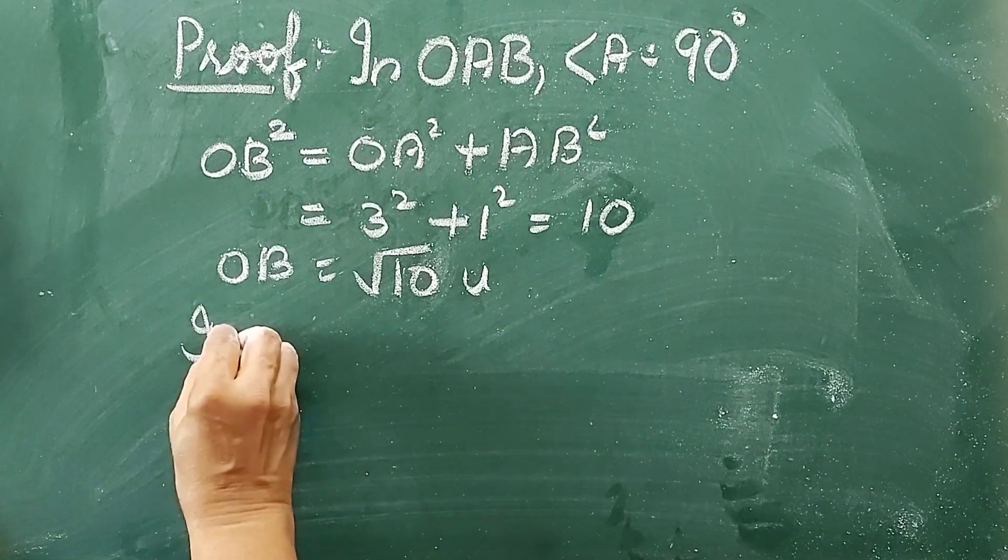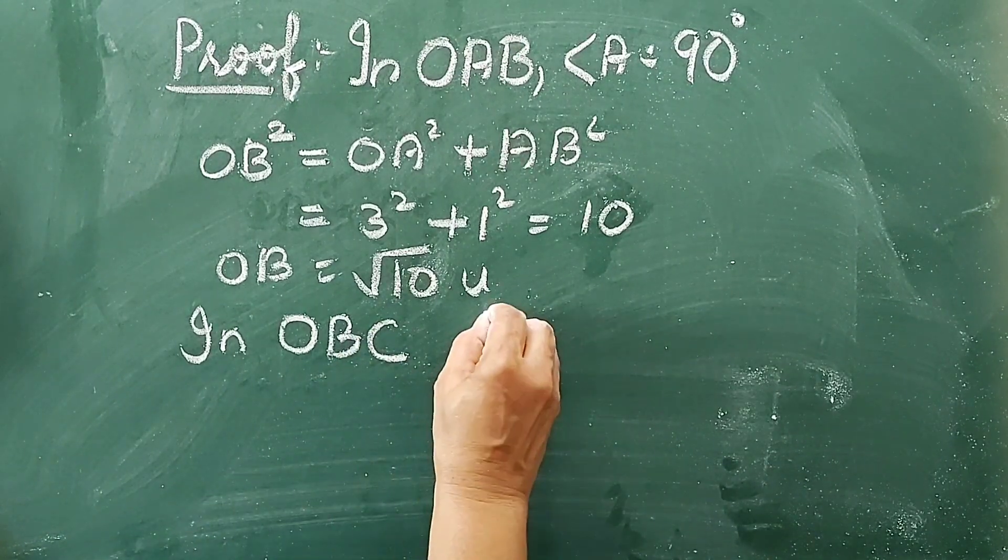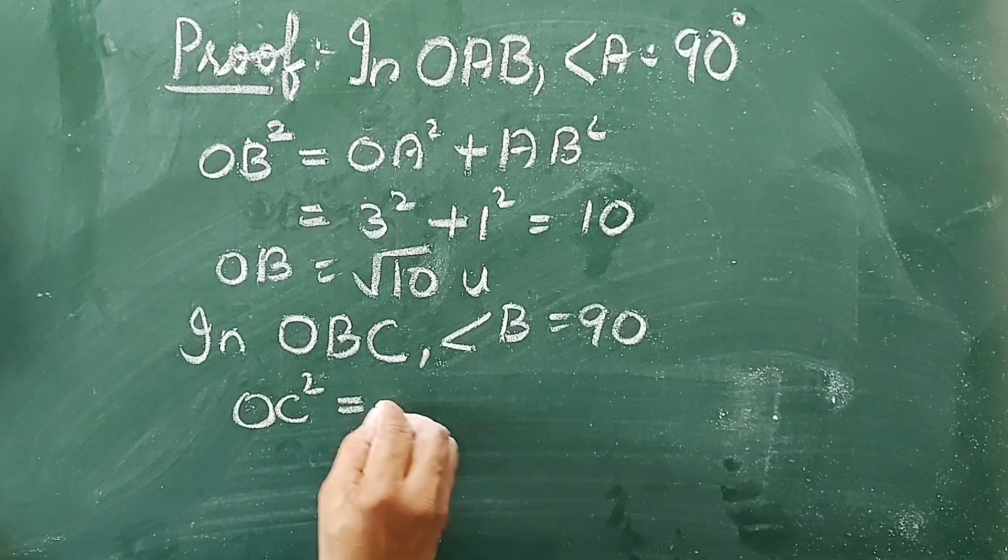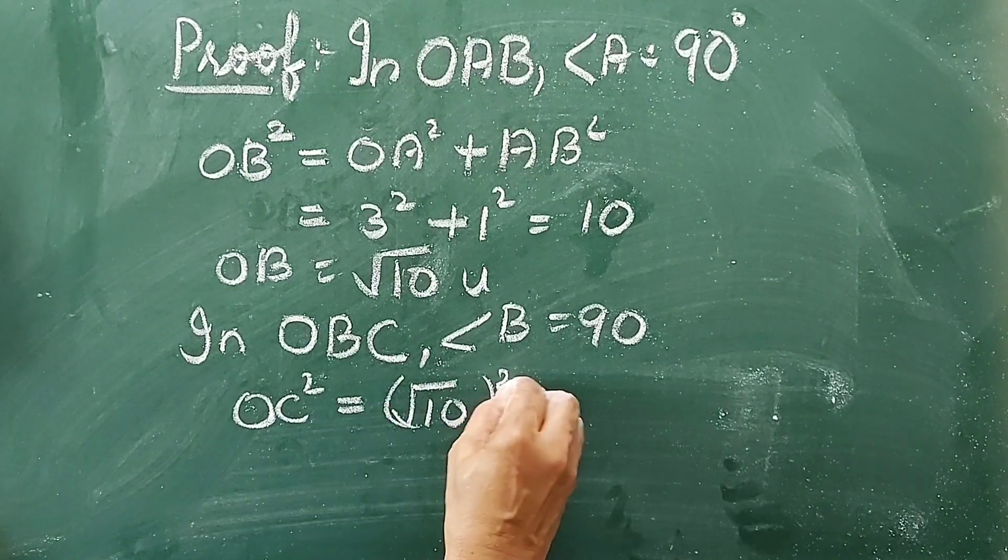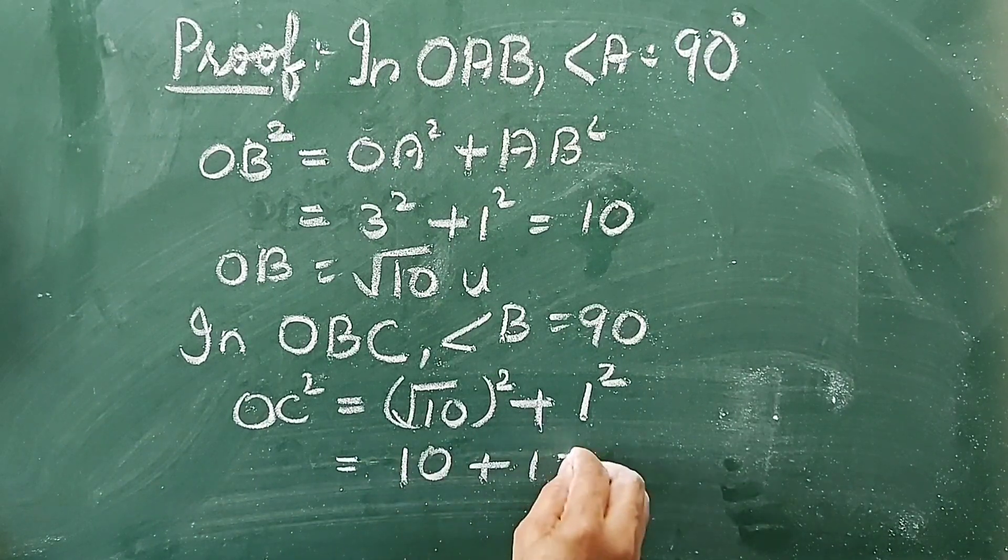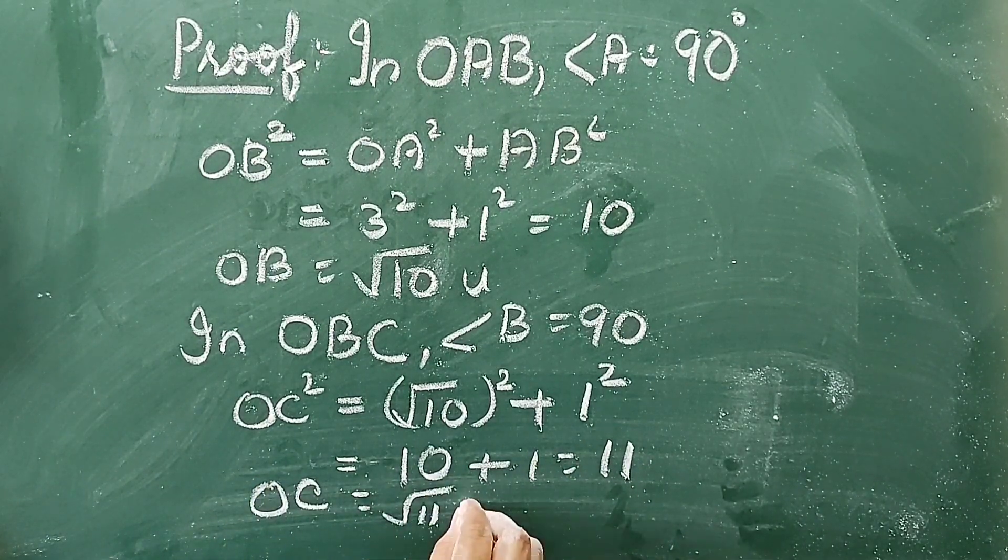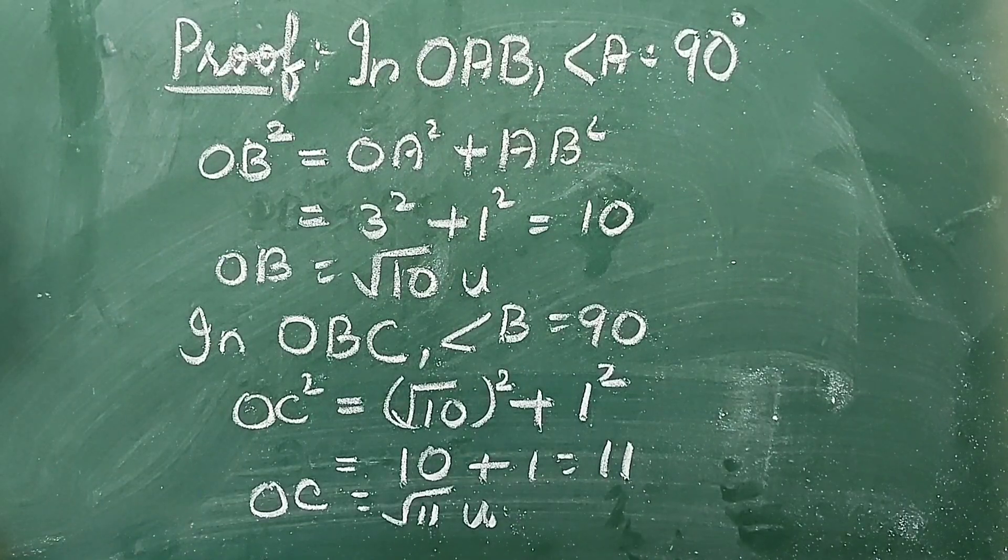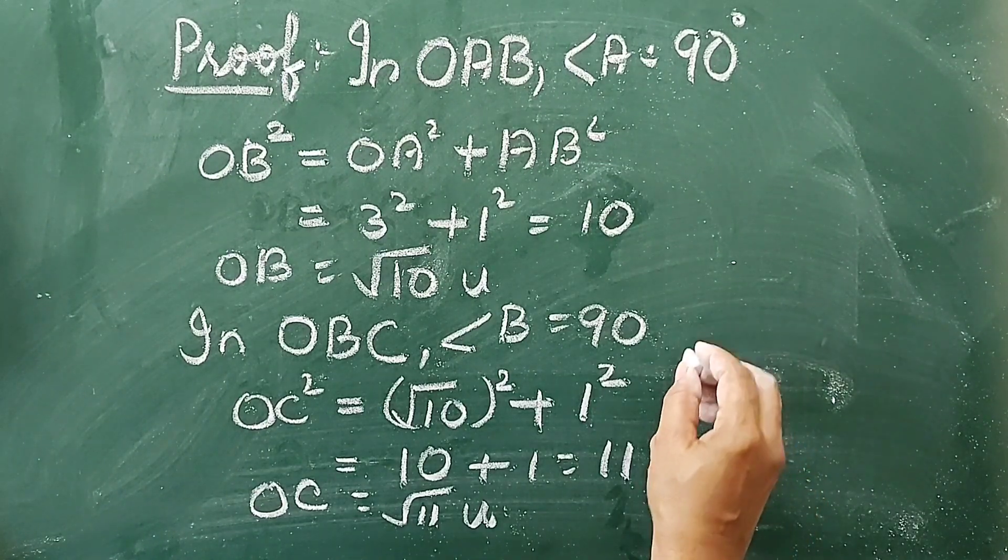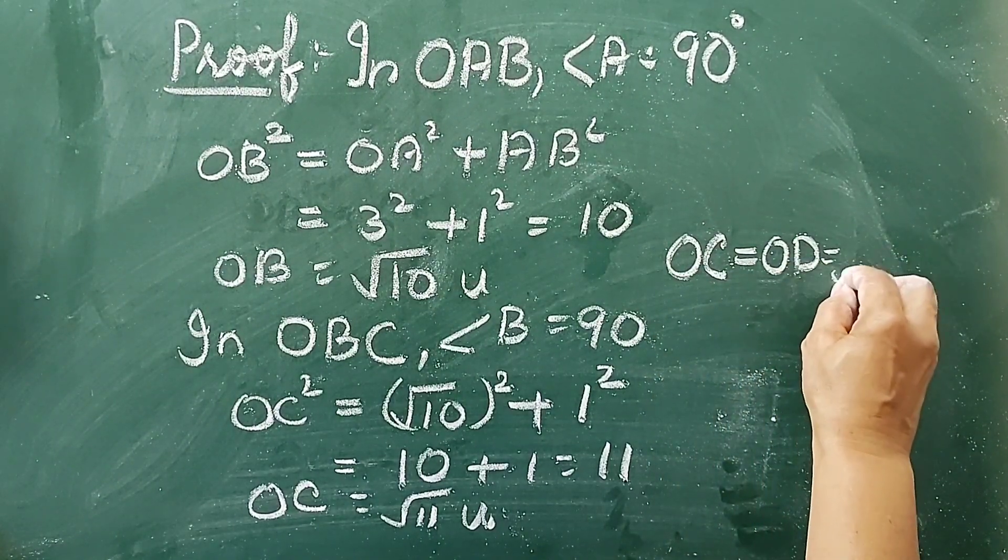Now, in triangle OBC, angle B equals 90°. Therefore, OC² is equal to (√10)² + 1² = 10 + 1 = 11. So, OC equals √11 units. That is, the point D represents √11 on the number line. So, we can write OC = OD = √11.